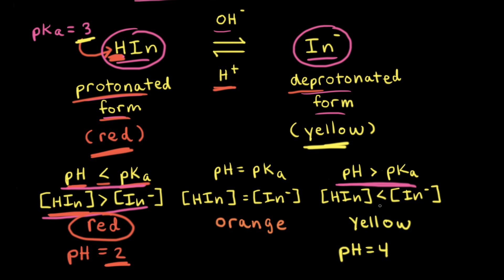The concentration of the weak acid is less than the concentration of the conjugate base. So at a pH of 4, we have a lot more of the deprotonated form, which is yellow, than the protonated form, which is red. Since we have more yellow than red, the solution would be yellow.